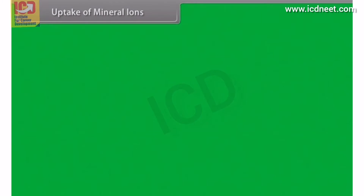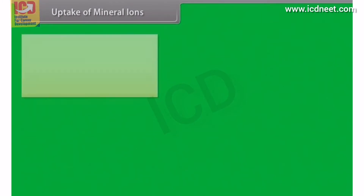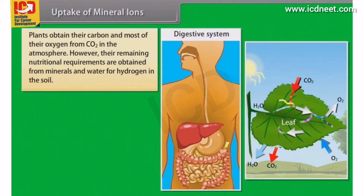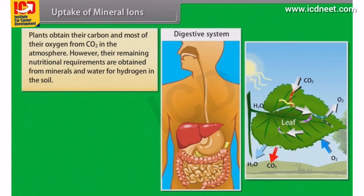As we all know, plants do not have teeth and digestive organs like us. They obtain their carbon and most of their oxygen from CO2 in the atmosphere. However, their remaining nutritional requirements are obtained from minerals and water for hydrogen in the soil.